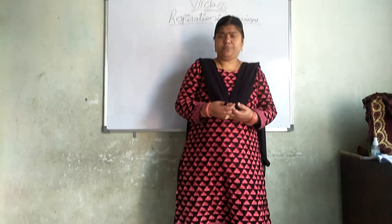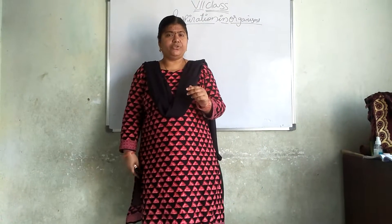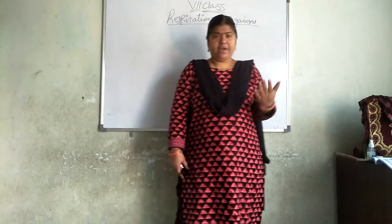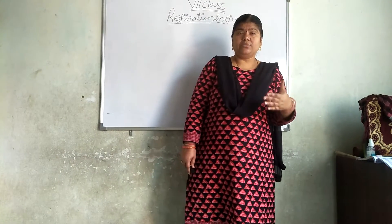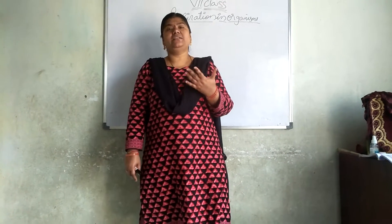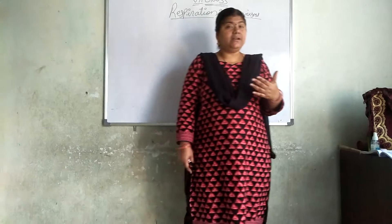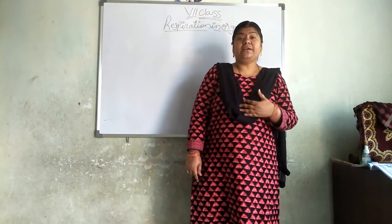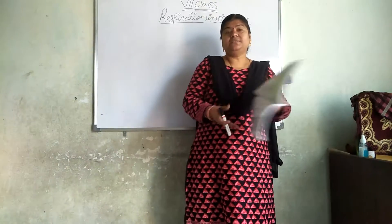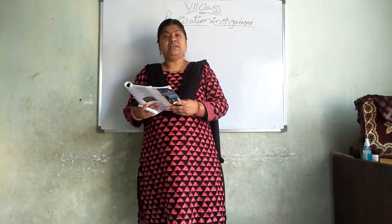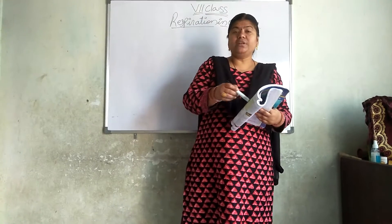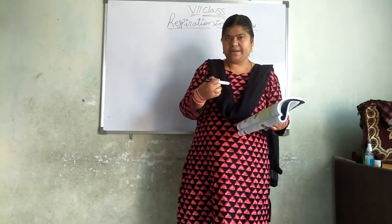We are discussing about respiration in organisms. Yesterday I told you how much we inhale and how much we exhale. When we are inhaling we are taking 1000 milliliters of air, and when we are exhaling we are exhaling 1000 milliliters of air. When we are inhaling, we are taking 210 milliliters of oxygen and the remaining gases in 790 milliliters, totally equal to 1000 milliliters.